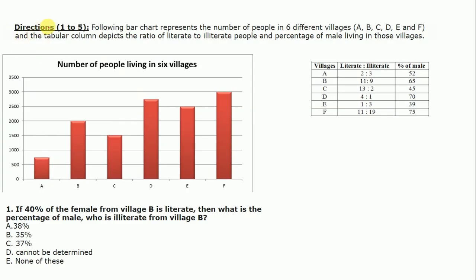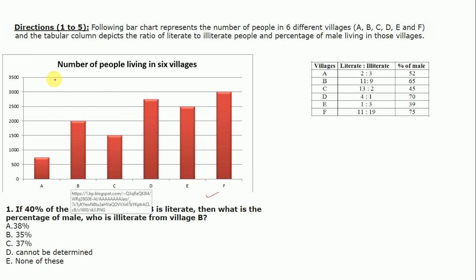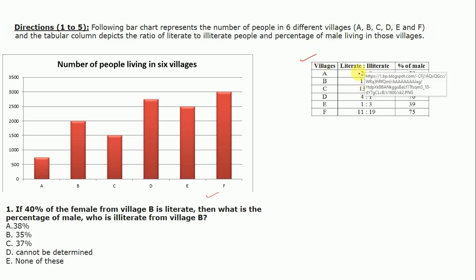This is our first question — Direction 1 to 5 — so we will follow this direction from questions 1 to 5. The following bar graph represents the number of pupils in 6 different villages A, B, C, D, E and F. The bar graph shows the number of pupils and names of the villages. The tabular column depicts the ratio of literate to illiterate pupils and the percentage of male living in those villages.